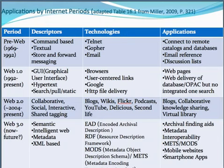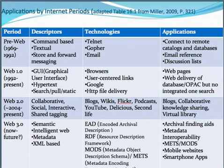Here we have the historical periods of the Internet. We have the pre-Web era, when we had the Internet but before the World Wide Web. Then we have Web 1.0, which started in 1992. Then Web 2.0, from 2004 to the present, and we're also talking about Web 3.0.